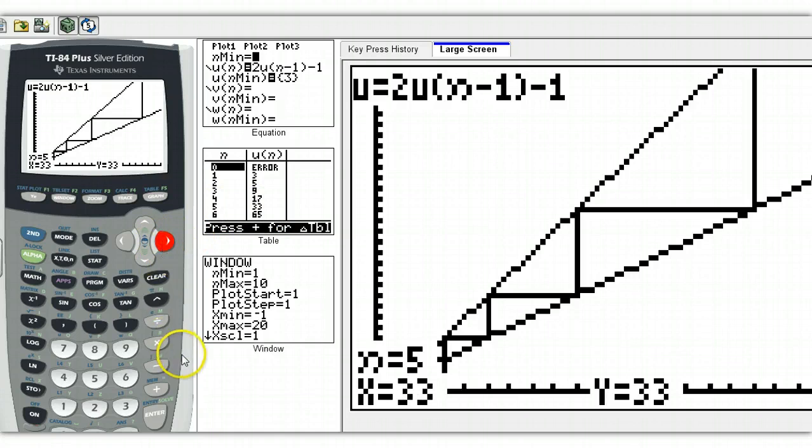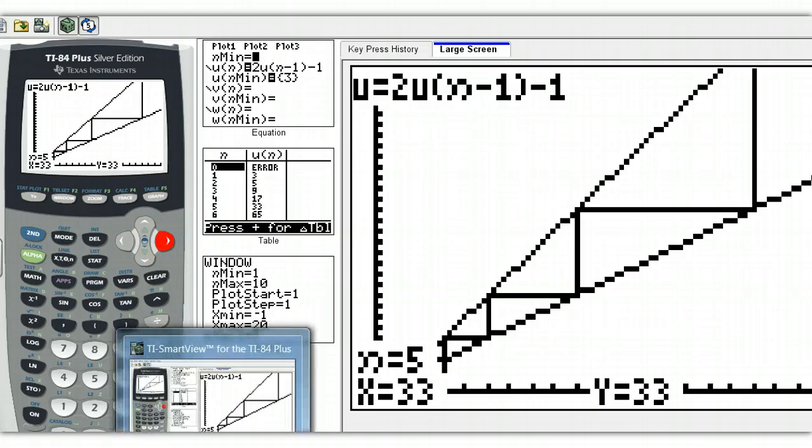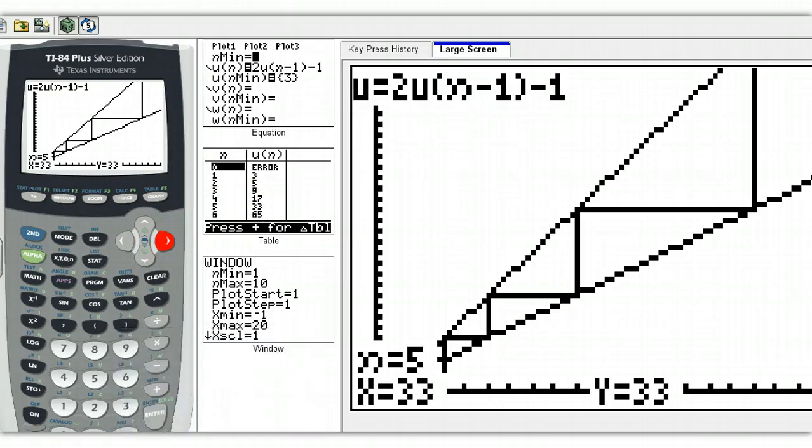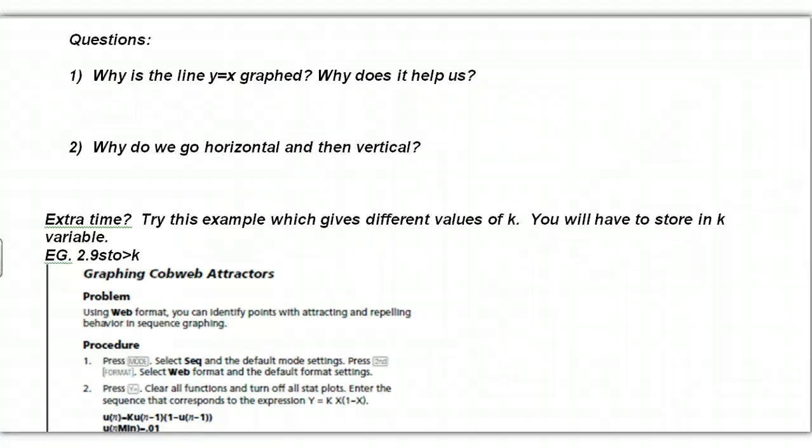Now for some of these they just go off to infinity. And this one you can tell goes off to infinity, keeps on going. Other ones though they do what we call attract. So let's see if we can find an example of that and see where they go to one specific value rather than going off to infinity. I guess before we do that answer these questions. Why do we have the Y equal to X? Why does it help us? Well hopefully you figure that out. Switch X and Y. And why do we go horizontal and vertical?